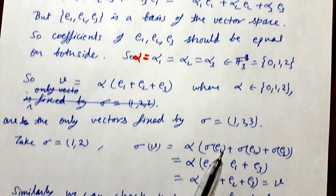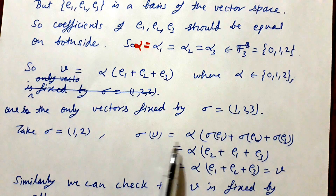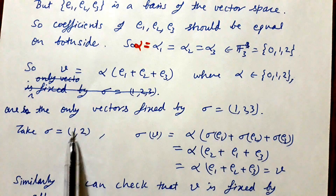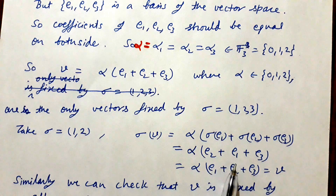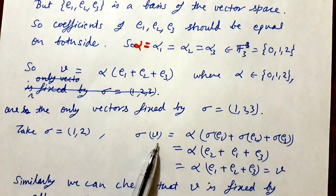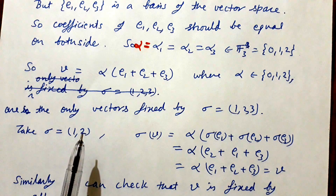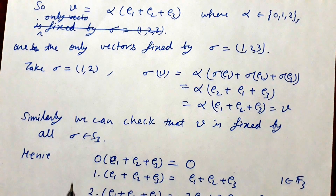Take sigma = (1 2). Applying it to V = alpha*(E1 + E2 + E3): sigma(V) = alpha*(sigma(E1) + sigma(E2) + sigma(E3)). Since sigma = (1 2), sigma(E1) = E2, sigma(E2) = E1, and sigma(E3) = E3. So sigma(V) = alpha*(E2 + E1 + E3) = alpha*(E1 + E2 + E3) = V. So V is also fixed by sigma = (1 2). Similarly, we can check that V is fixed by sigma = (1 3), sigma = (2 3), and sigma = (1 3 2) as well. So V is fixed by all sigma in S3.